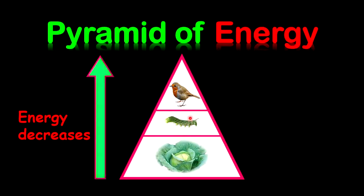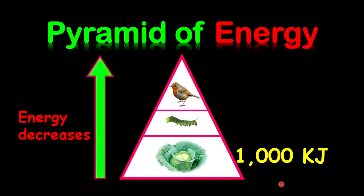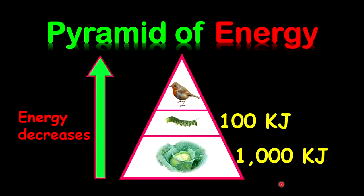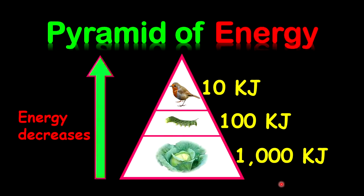The animals will use energy for movement, growth, development, reproduction, and any living functions. Along the food chain, energy decreases approximately 10%. So let's say we started out with 1,000 kilojoules of energy available to the cabbage. 10% will pass on to the caterpillars, so we only have 100 kilojoules of energy. And for the bird, it will be only 10 kilojoules of energy available.